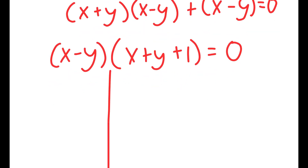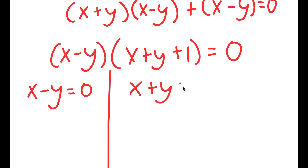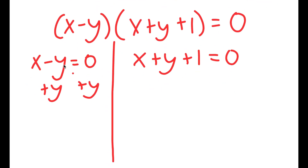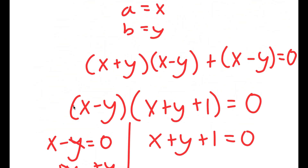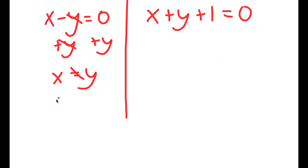This gives me two equations: x minus y equals 0, and x plus y plus 1 equals 0. For x minus y equals 0, adding y on both sides gives x equals y. But x can't equal y — x minus y does not equal 0 — so this case is false.